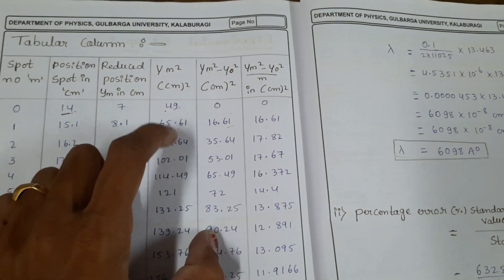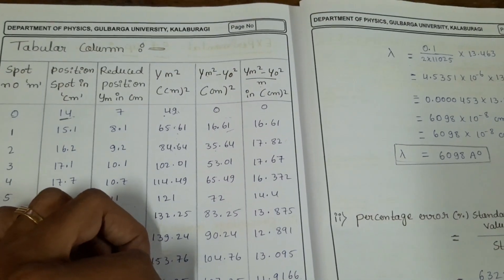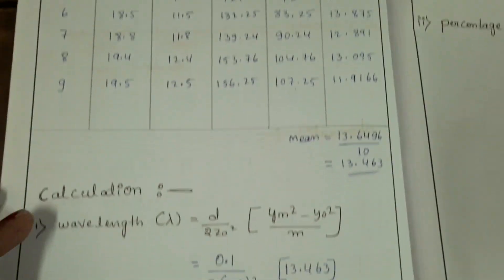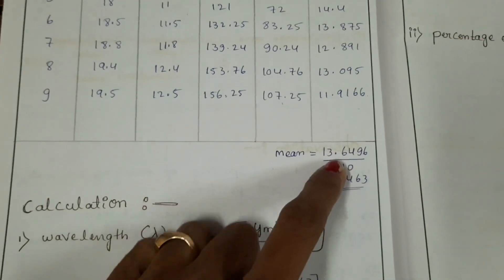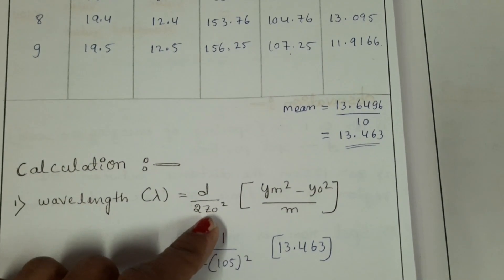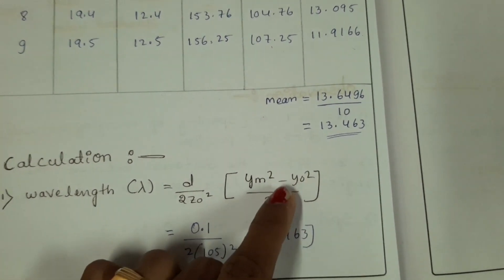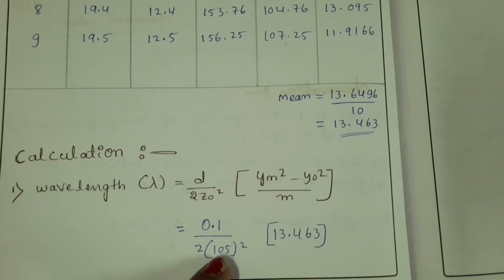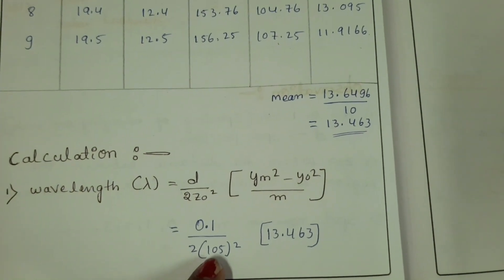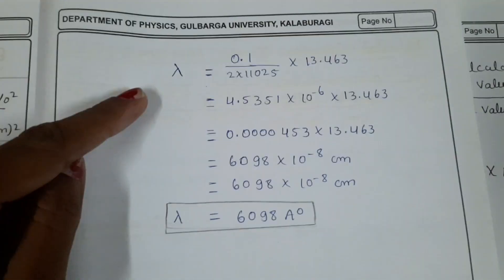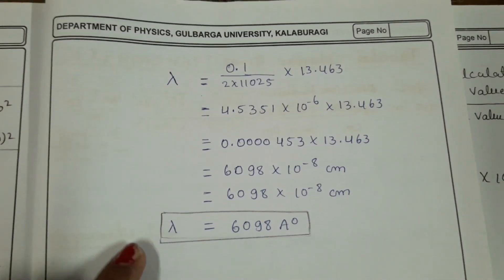You have to divide these values by m. So final values you will get, then you have to take the mean of all these readings. Then calculate the wavelength. There is a formula: d/2z₀² multiplied by (y_m² - y₀²)/m. Put in that formula the z₀ value, distance between screen and scale, and the average. Then you will get the wavelength of the given laser light.